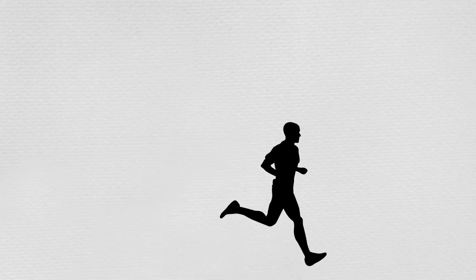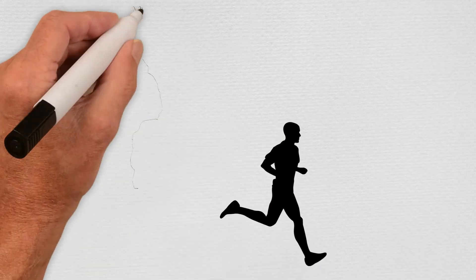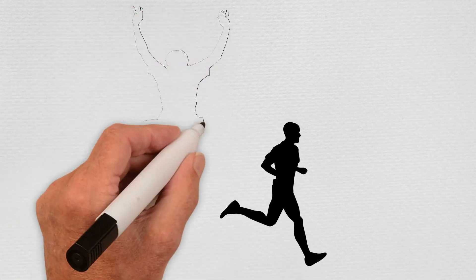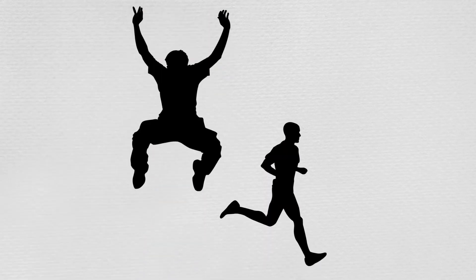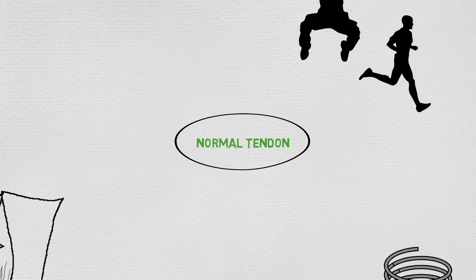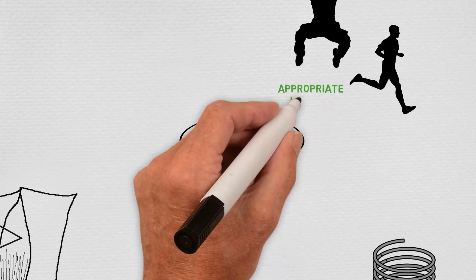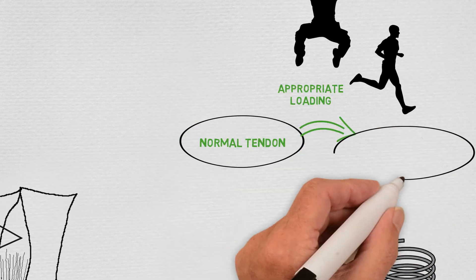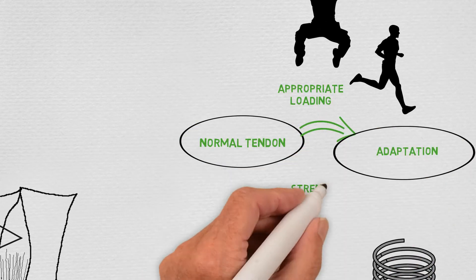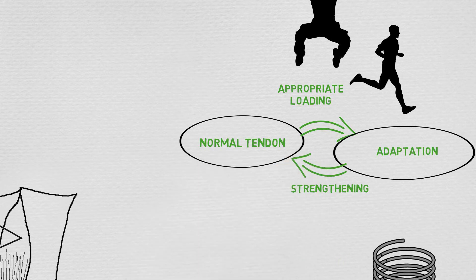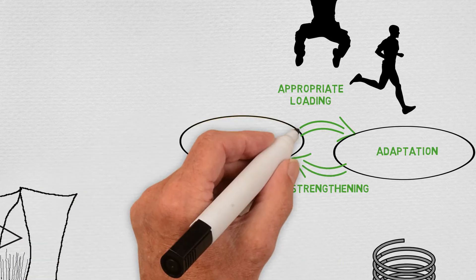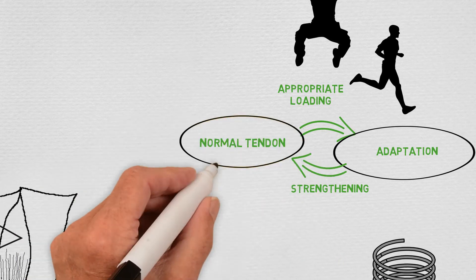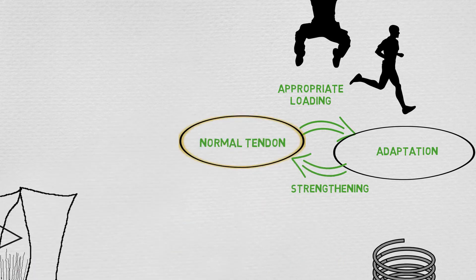When a tendon is loaded appropriately, it adapts and becomes stiffer and more resilient, but does not become thicker — the tendon structure is improved rather than increasing the size of the structure.